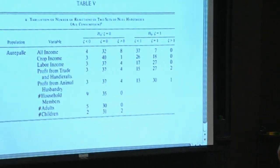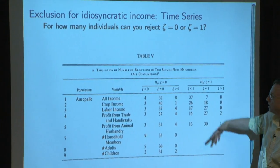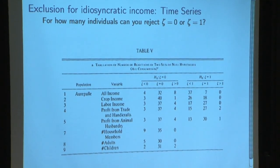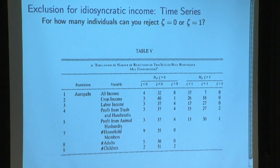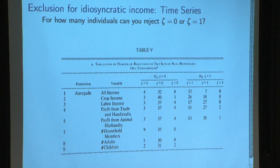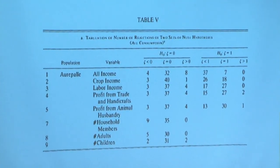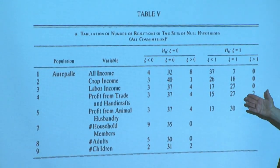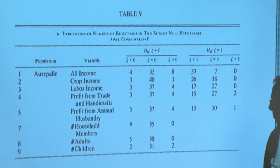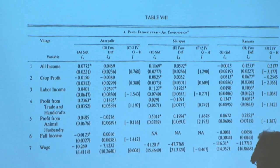One household at a time in the time series — does the data have any power? The problem is you test one null like full risk sharing and you can't reject it because the confidence intervals are so large. So you want to test other things, like autarky. The weight of the evidence is it's not autarky — we can pretty much soundly reject that, and risk sharing is doing quite well.